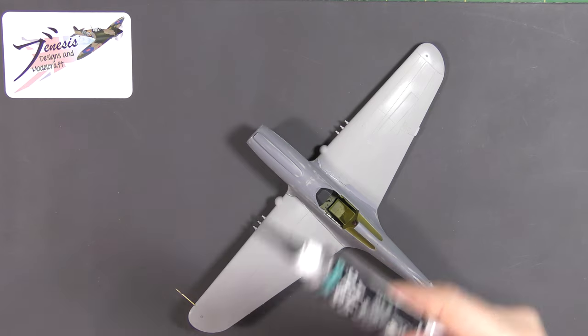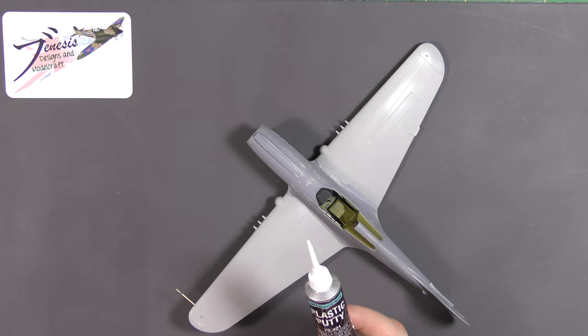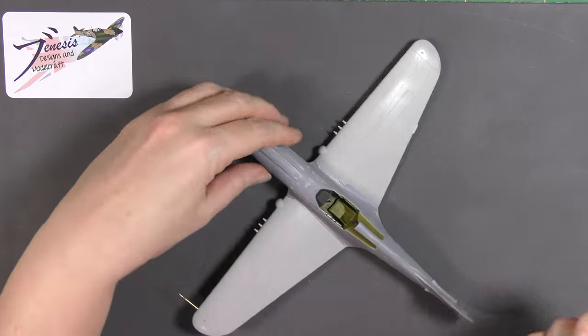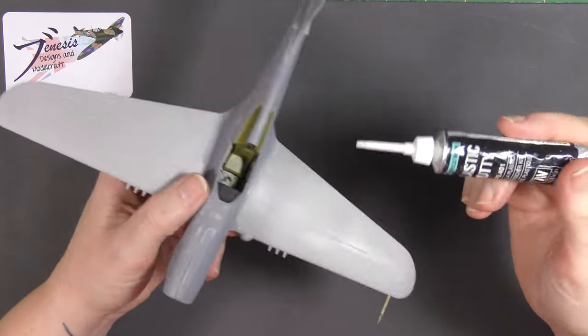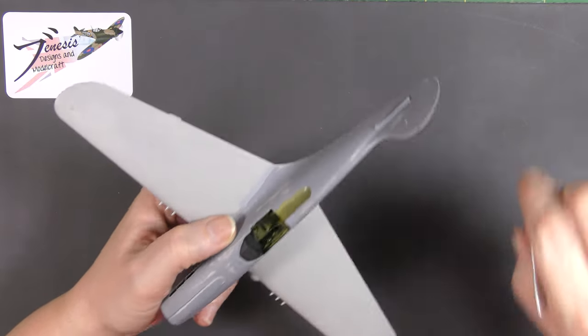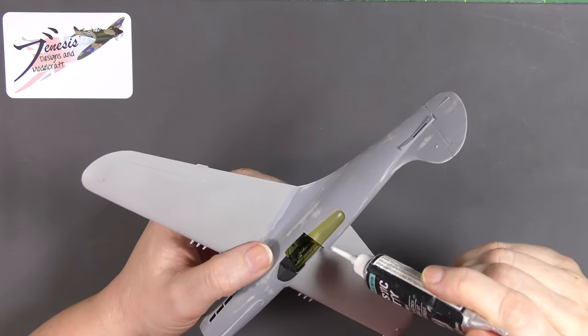That being Mr. Surfacer 500 and Tamiya basic putty. So starting at the beginning, let's go with the Vallejo. This is a white, it's 100% acrylic resin, a kind of water-based putty. If you apply it and try to sand it, it's honestly just absolutely nasty, but for this kind of thing it's legendary.